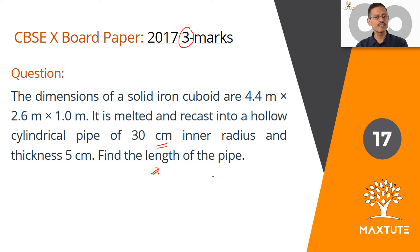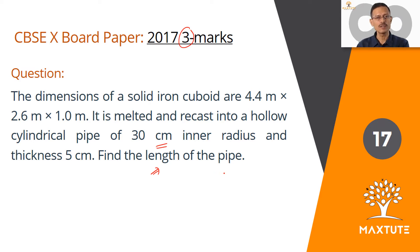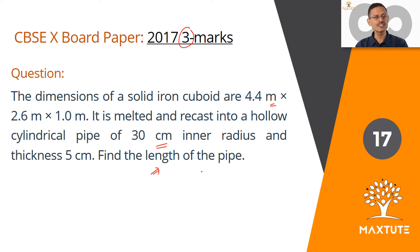As with all these solid geometry mensuration questions, keep track of the units and make sure that the units are consistent. Here the units used for the cuboid are in meters and those for the cylinder are in centimeters. So essentially, either convert the centimeters to meters or the meters to centimeters before doing the final calculation.